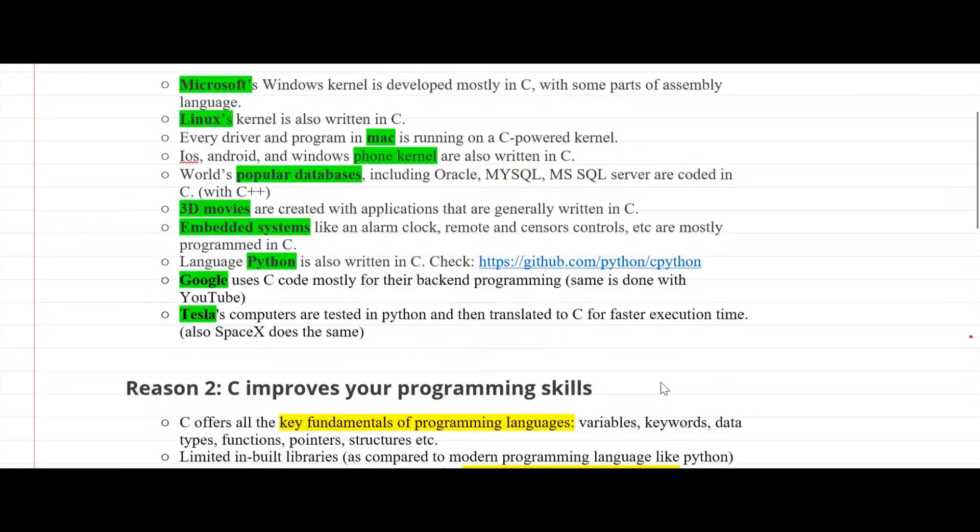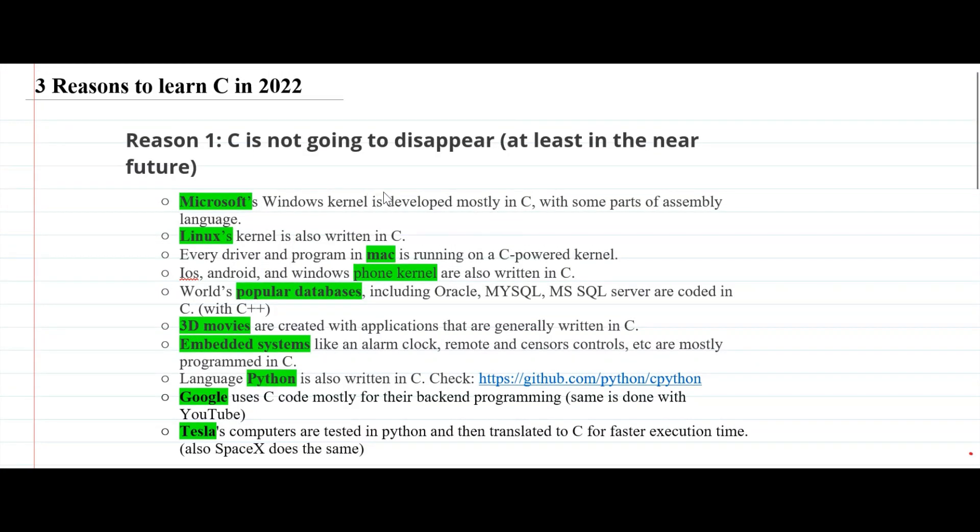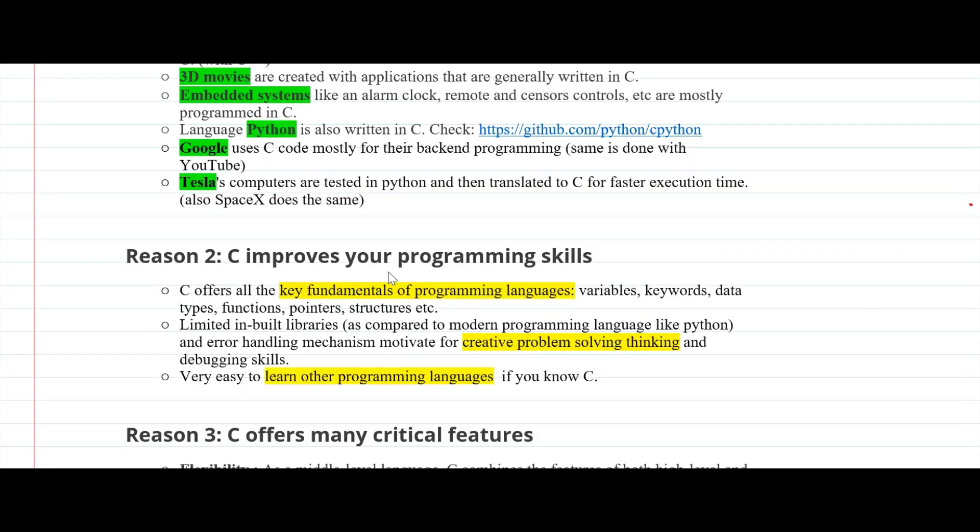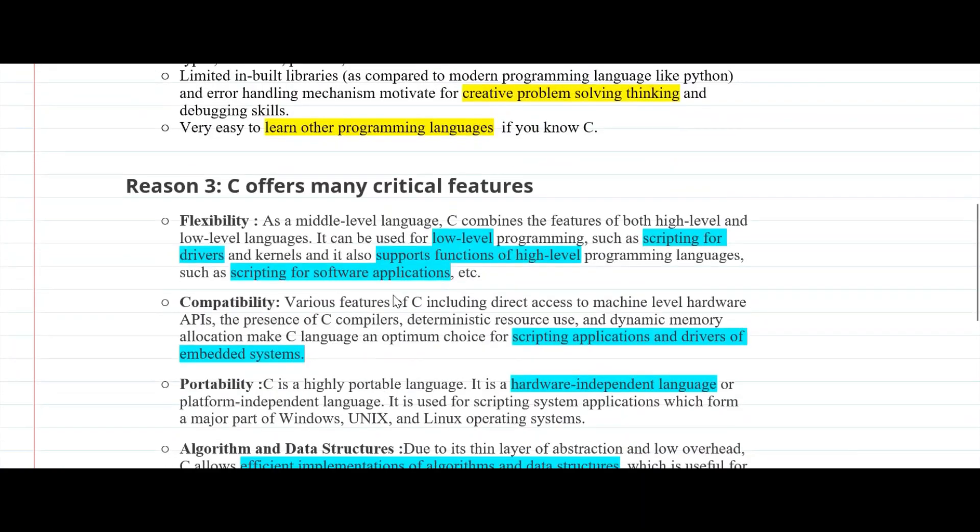So in summary, what I want to highlight is the very first thing is relevance. C is still relevant and it's not going to disappear. Many devices are using C so its application is limitless. Second thing is if you are a beginner and if you are confused between modern programming languages and C, then you must start with C because C will definitely improve your programming skills.